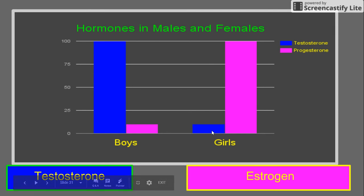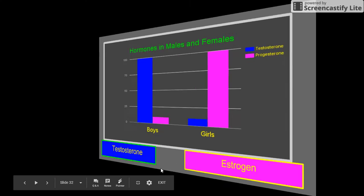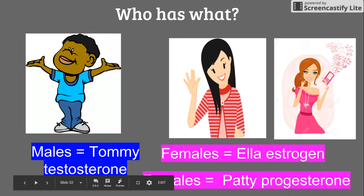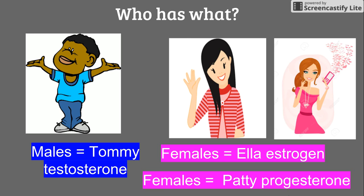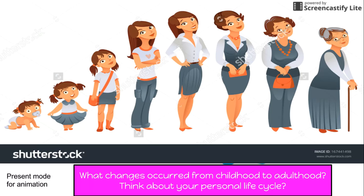Males have testosterone — we can refer to them as Tommy Testosterone. Females have estrogen and progesterone — we can refer to them as Ella Estrogen and Patty Progesterone. So what changes occurred from childhood to adulthood?